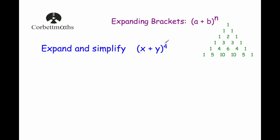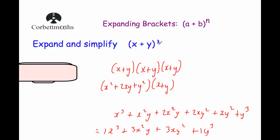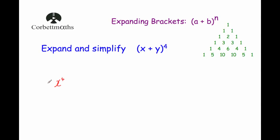Our next question is to expand and simplify x plus y to the power of 4. Using Pascal's triangle, we notice the powers of x decrease and the powers of y increase. So we write: x to the power of 4, then x cubed y, then x squared y squared, then xy cubed, and finally y to the power of 4, leaving gaps for coefficients.